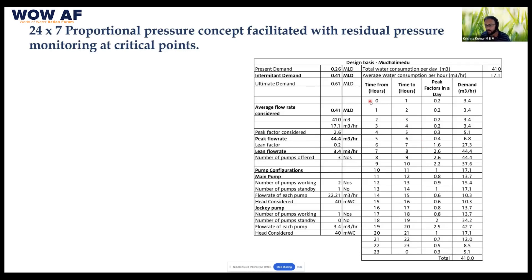There are various peak factors which I have multiplied. Generally, when you see a demand pattern, I consider 0 to 24 hours and multiply the peak factor each hour against the average flow to get the demand pattern. In this demand pattern, the highest demand is 44 cubic meters per hour, occurring between 7 to 9 AM — two hours of peak demand — and based on that only we size our pumps.